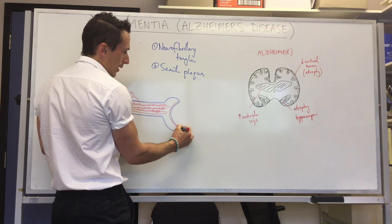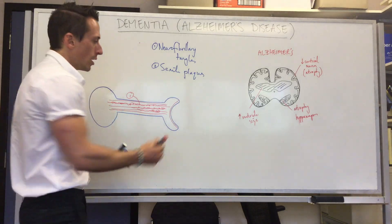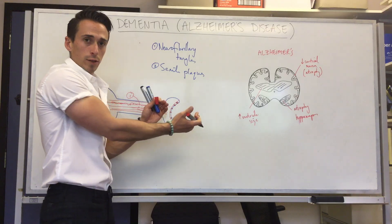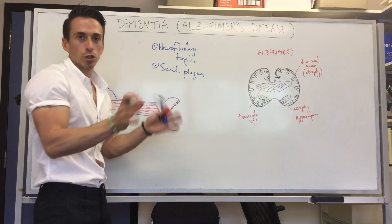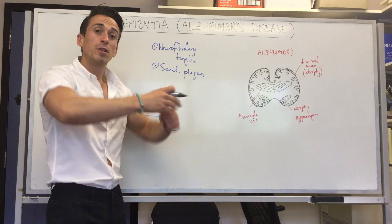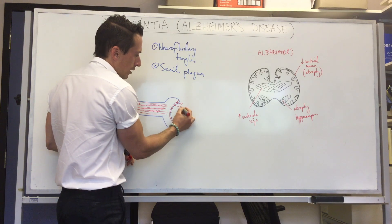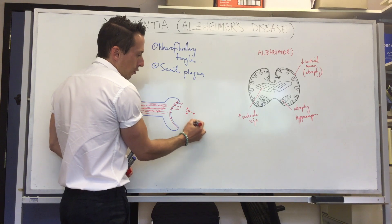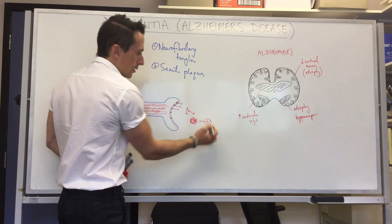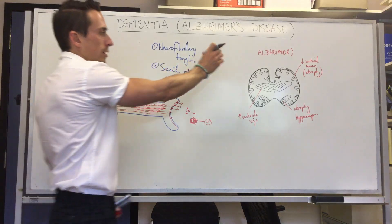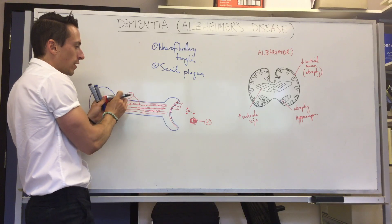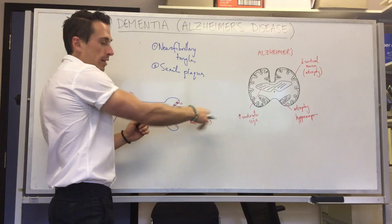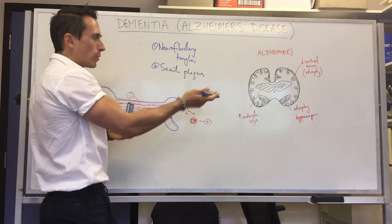As for senile plaques: in the plasma membrane of a neuron there are many proteins, some of which are important for appropriate synaptic function — proper release and reuptake of neurotransmitters. In Alzheimer's disease, some of these proteins misfold and become dysfunctional, getting released into the extracellular fluid where they come together to form a large misfolded protein aggregate called a senile plaque. Additionally, many Alzheimer's patients show reduced levels of acetylcholine.